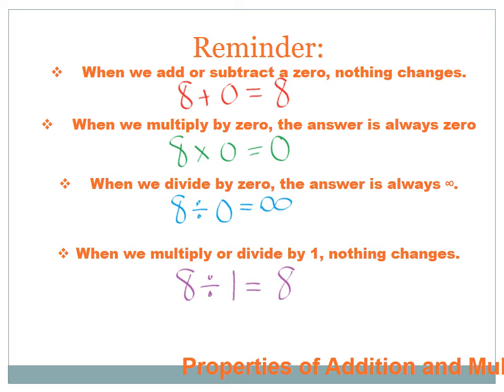A reminder about multiplying or dividing with 0s or 1s. First, when you add or subtract a 0, nothing changes: 8 plus 0 equals 8, and 8 take away 0 equals 8. Second, when we multiply by 0, the answer is always 0: 8 times 0 is 0, and a million times 0 is 0. Third, when we divide by 0, the answer is always infinity: 8 divided by 0 equals infinity. And lastly, when we multiply or divide by 1, nothing changes: 8 divided by 1 equals 8, and 8 times 1 equals 8.